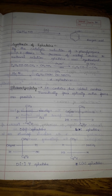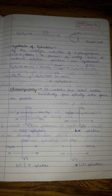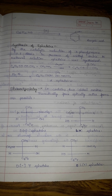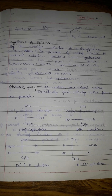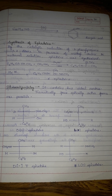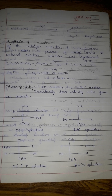Regarding stereochemistry, ephedrine contains two chiral centers, and therefore has four optically active forms.